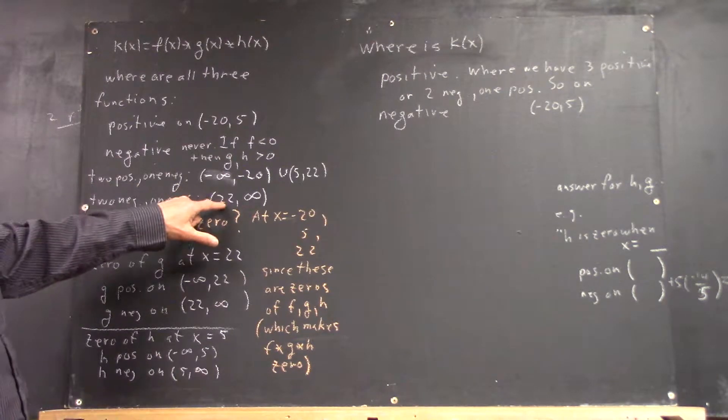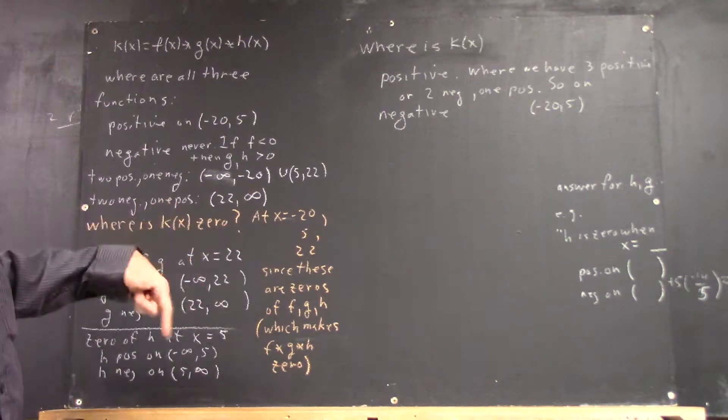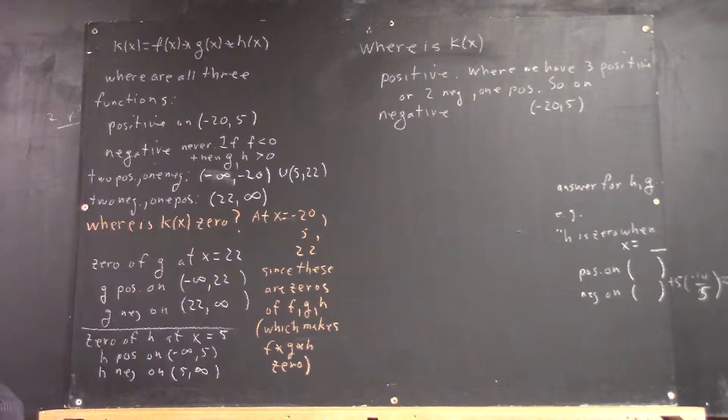Two negative one positive. On 22 infinity, we got two negative one positive. I can't read my own writing, okay?